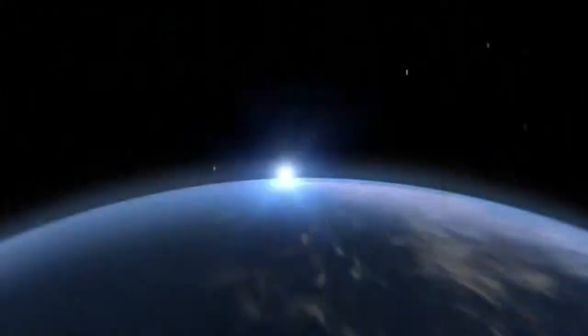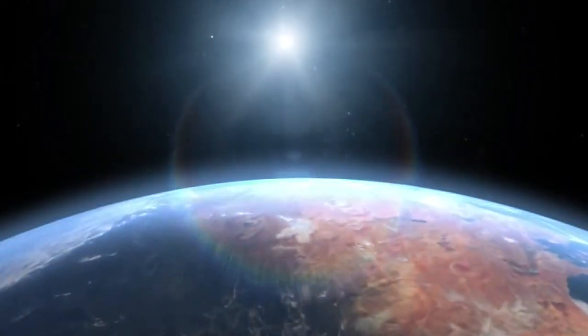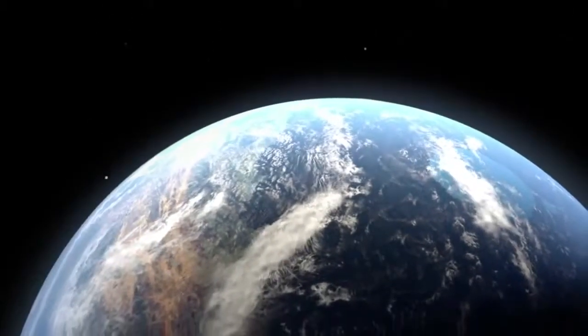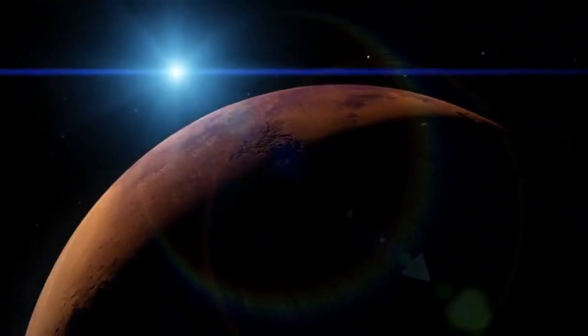Scientists think that Mars, a dry, dusty planet, may have once looked a lot more like Earth, with a blue atmosphere, thick clouds, and possibly even water. Scientists also think that Mars lost its atmosphere over the course of billions of years, gradually transforming into the red planet we know today.